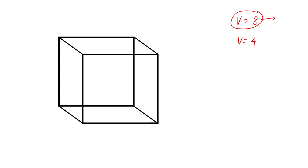You have to select half of them in such a way that you can form a regular tetrahedron. It can be done, but you have to be smart — you can't just choose four vertices on one face only.